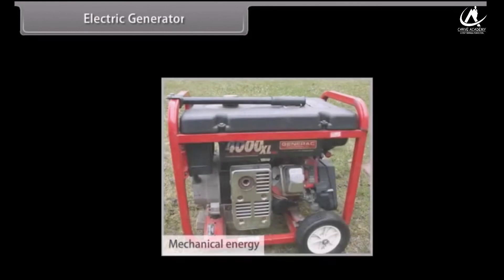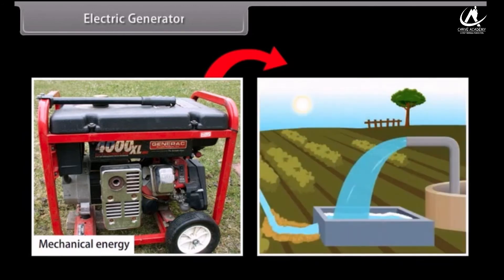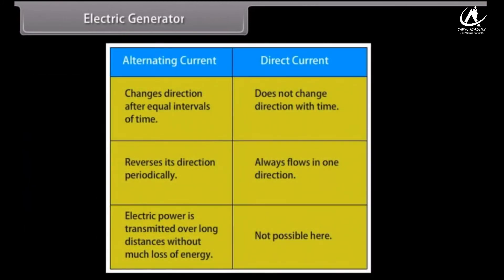Electric Generator. An electric generator converts mechanical energy to electrical energy. It forces electrical charge to flow through an external electrical circuit. Examples include a water pump, which causes water to flow but does not create water. Electric generators operate based on electromagnetic induction. That is, whenever a conductor moves to a magnetic field, a current is induced in this conductor. If a magnet is spinning inside a coil, alternating current is induced in the coil. Alternating current changes direction after equal intervals of time. The other type of current is direct current, which does not change direction with time.